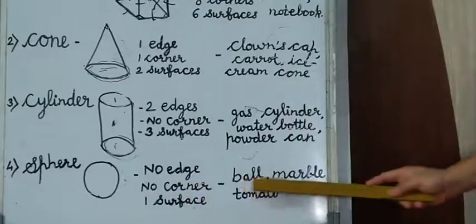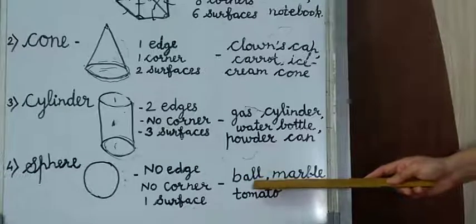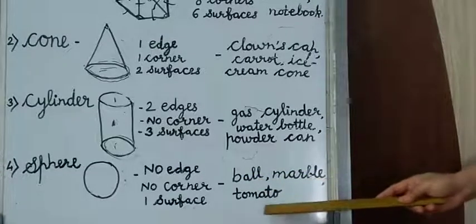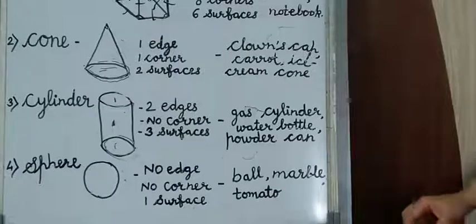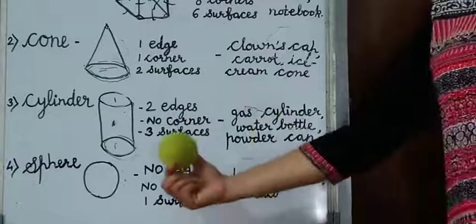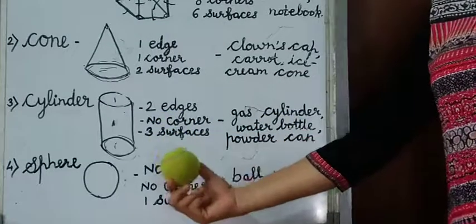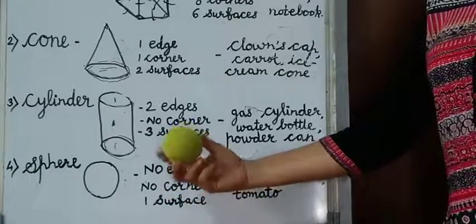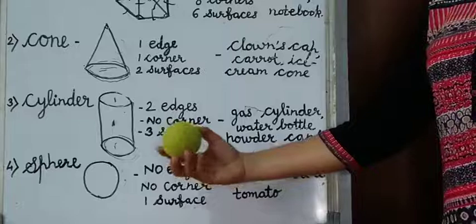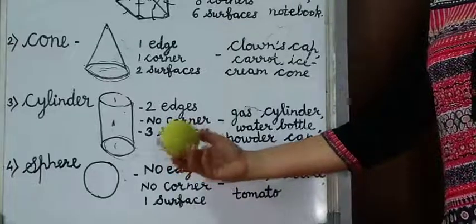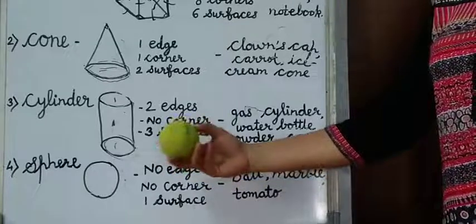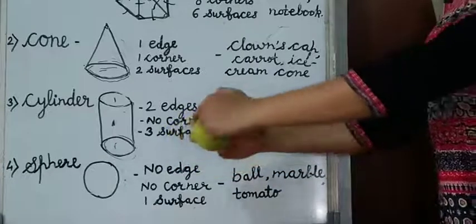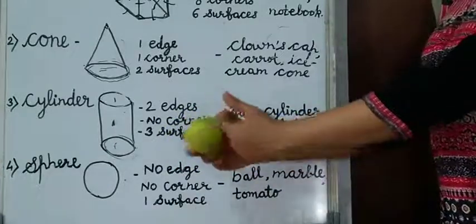Its examples are ball, marble, tomato. See, children, this is a ball. It is a ball and this ball is having a sphere shape. But it does not have any edge, any side, any corner. And it is having only one surface, and the full surface is curved, circular.